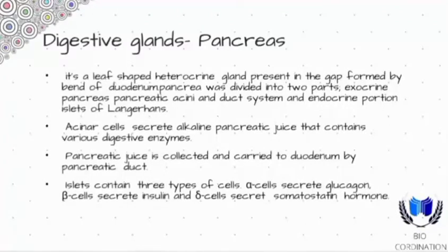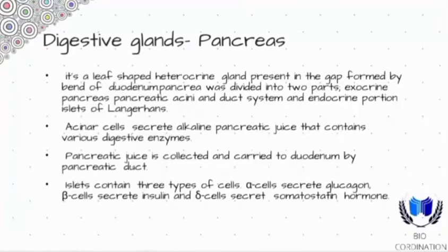Glucagon and insulin both work to maintain blood sugar level. Glucagon is released to stop hypoglycemia — that is, low blood sugar level — while insulin is released to stop hyperglycemia — that is, high blood sugar level. Together they control blood sugar level.